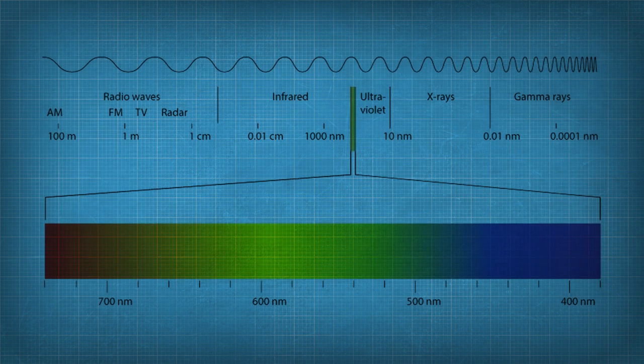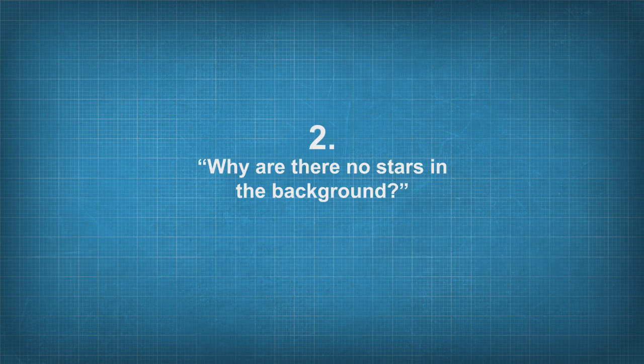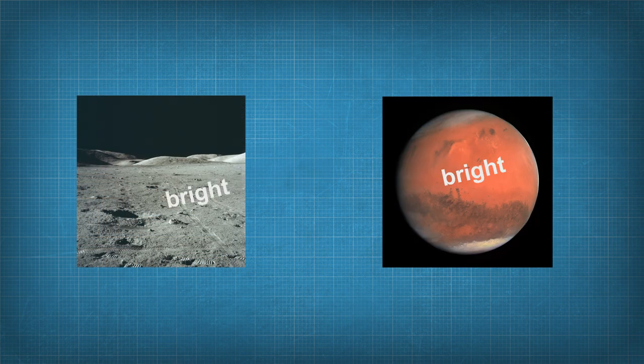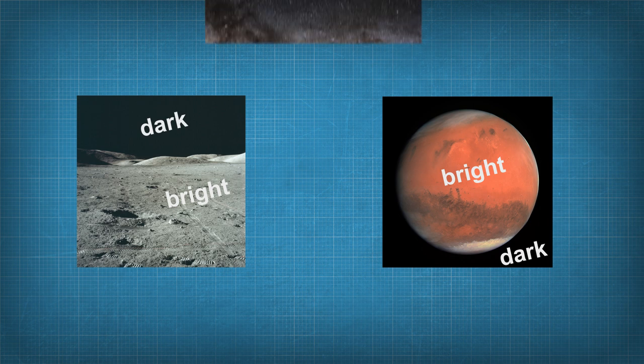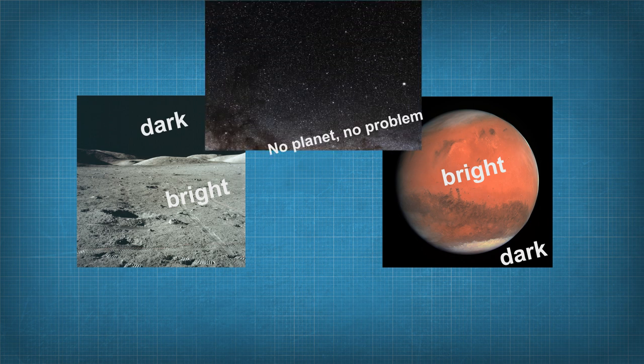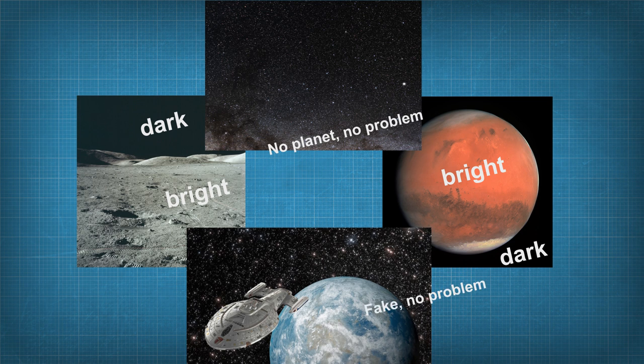Why are there no stars in the background? It has to do with exposure. Next to a sunlit planetary surface, the light of the stars is too faint to be recorded. This is actually a good way to find out if a picture is fake. If there are planets shown in full sunlight and there are stars in the background like in movies, there's a high chance this is Photoshop or CGI.